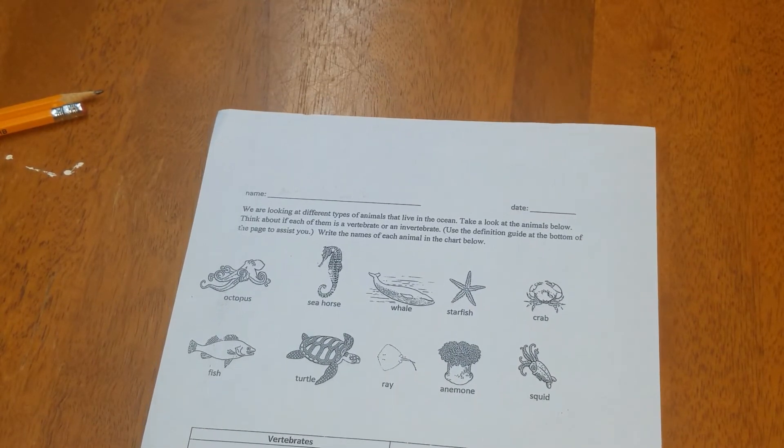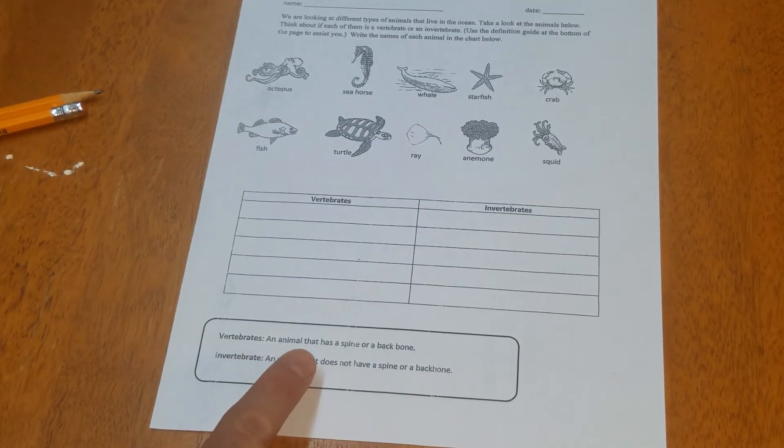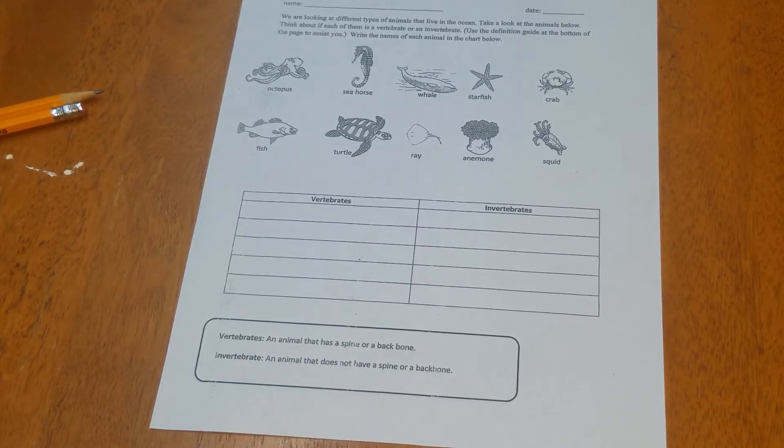And you can use this guide here at the bottom, but hopefully you guys remember this by now, that a vertebrate is an animal that has a spine or a backbone. An invertebrate is an animal that does not have a spine or a backbone or really any bones.